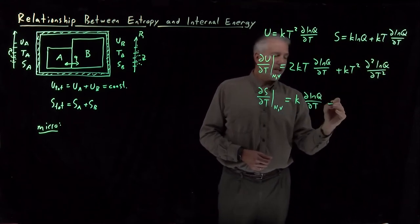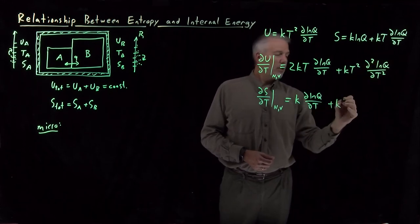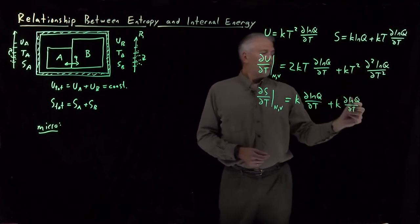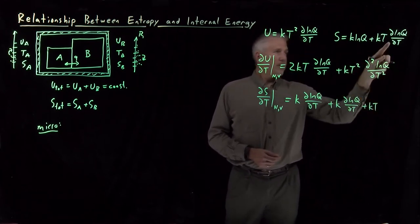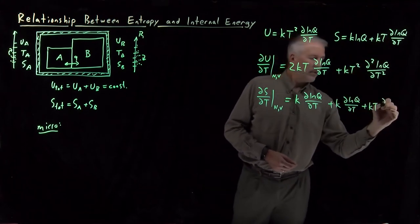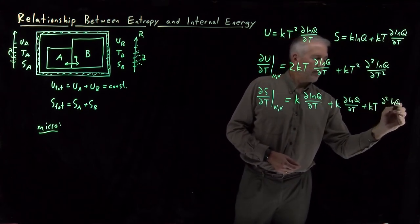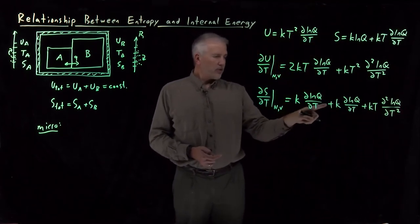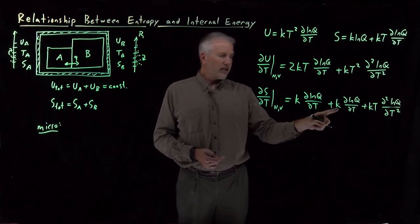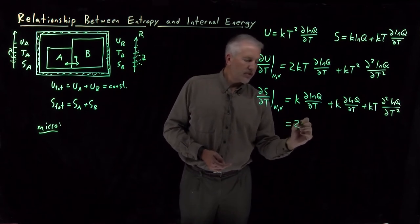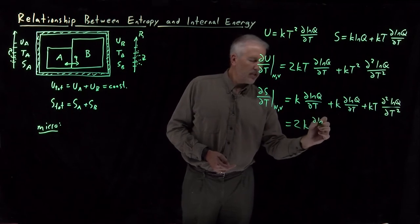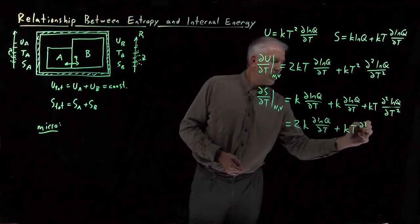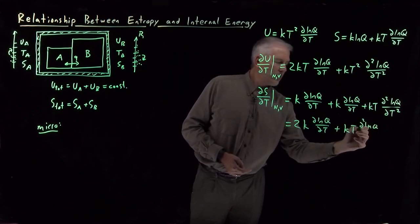Temperature derivative of kT is just k times d log q dT. Or, leaving the kT alone, taking the temperature derivative of d log q dT, gives me the second derivative of log q with respect to T. So, if I look at that expression, the first two terms, k d log q dT and k d log q dT, those are the same. So, I've got 2k d log q dT. And, I'll leave the last term unchanged, kT d squared log q dT squared.